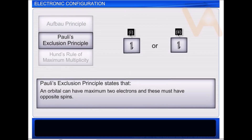Second is Pauli's exclusion principle. It states that an orbital can have a maximum of two electrons, and these must have opposite spins.